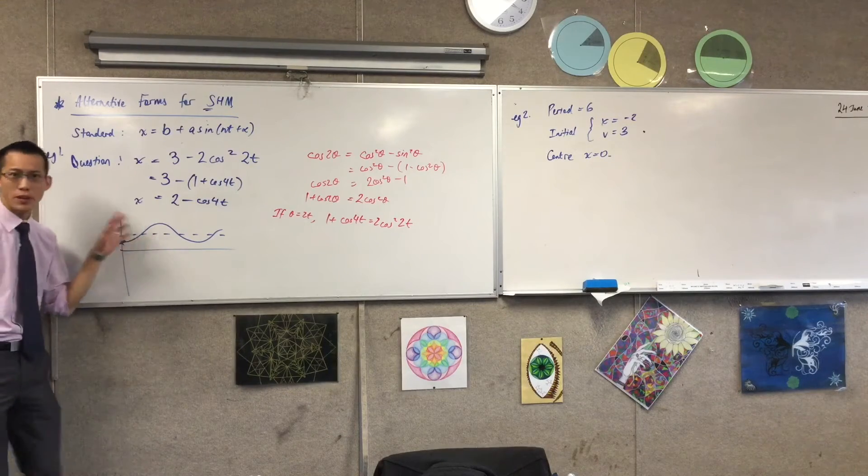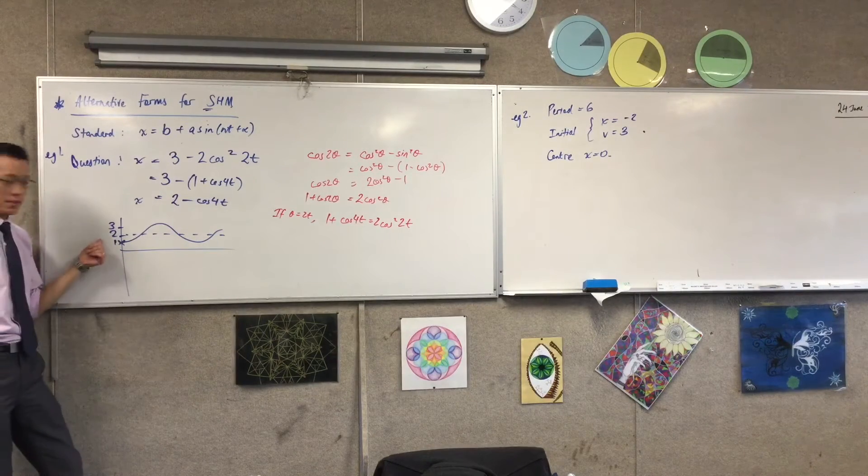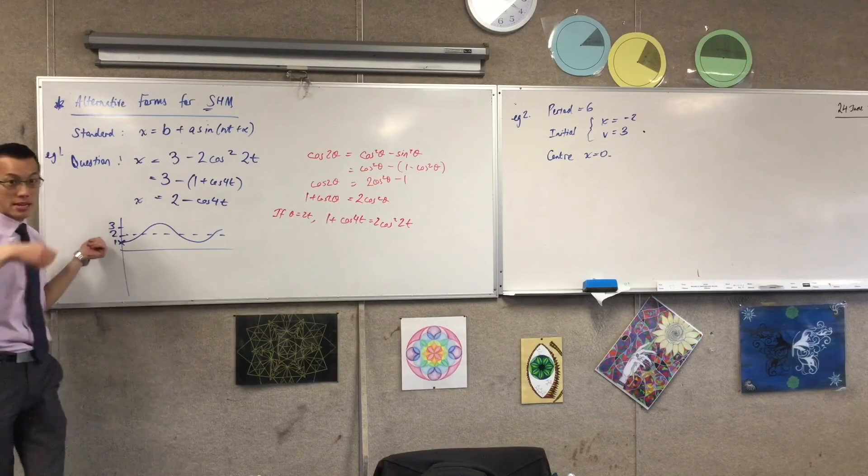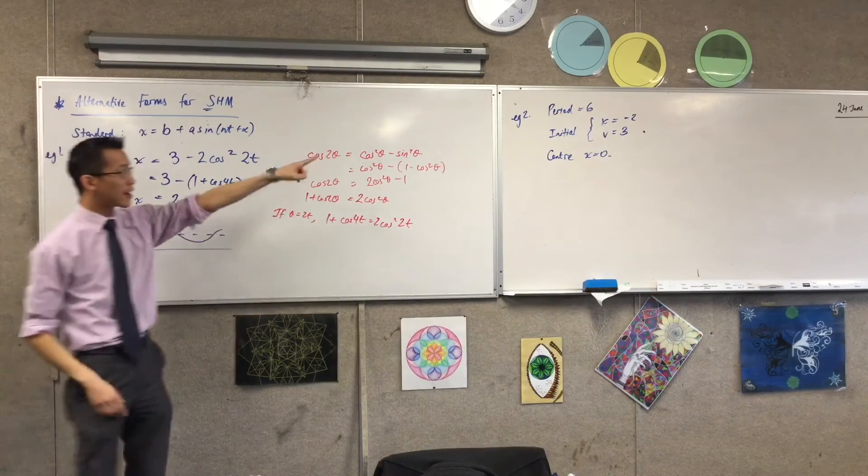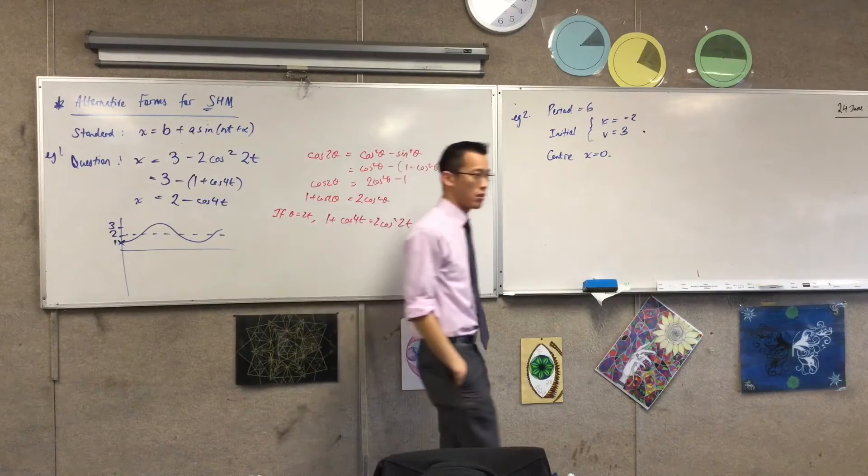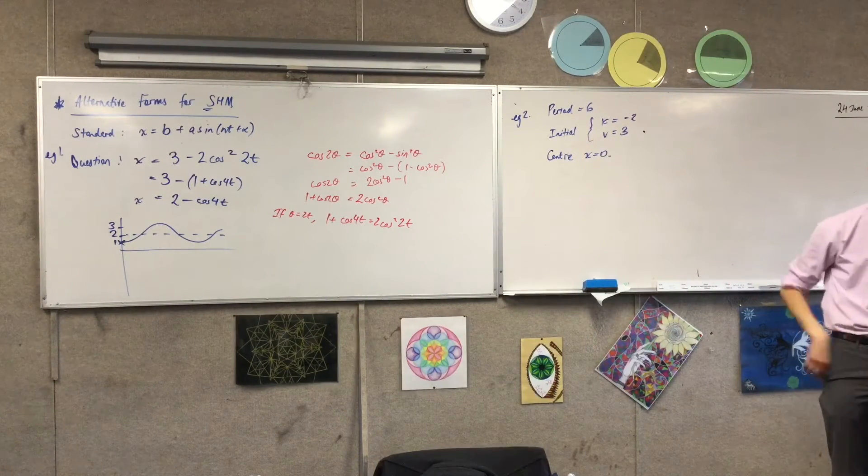Now this is a bit unusual because there's something we usually know about simple harmonic motion, something obvious that hasn't been told to you here. What are we missing? Have a look at this graph. When we drew it, how did we draw it? We went from the center of motion and then the immediate next thing I asked you was, well how far away can I get from the center of motion?